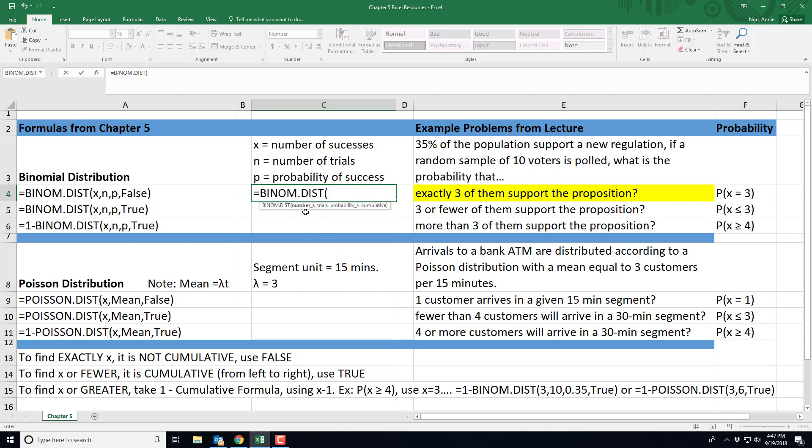So here the number of successes in our scenario is exactly three. So I'll type in three. The number of trials that we have, that's our sample size, that's ten.